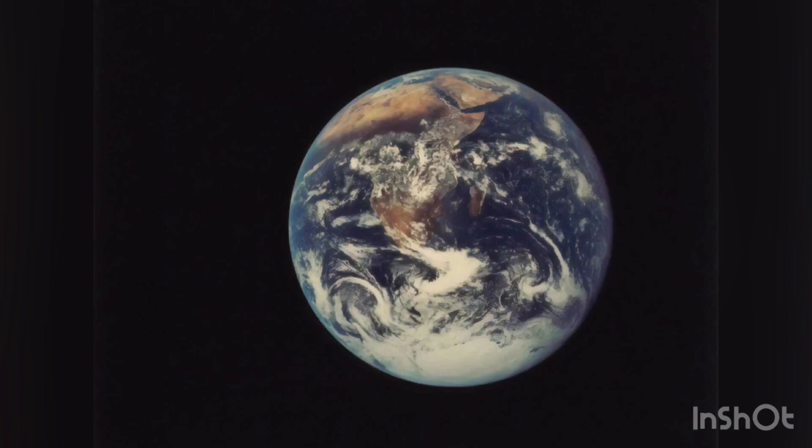Earth is about eight light minutes away from the sun and orbits it, taking a year to complete one revolution. Earth rotates around its own axis in slightly less than a day. Earth's axis of rotation is tilted with respect to the perpendicular to its orbital plane around the sun, producing seasons.